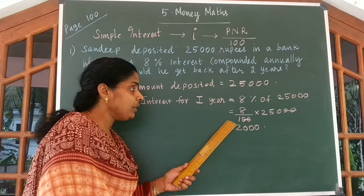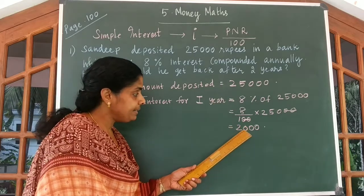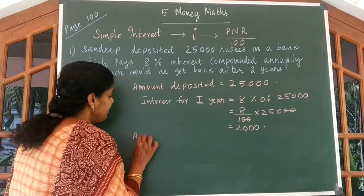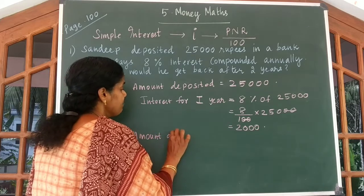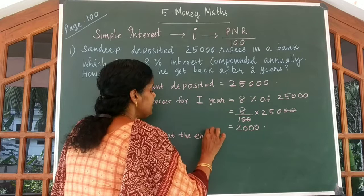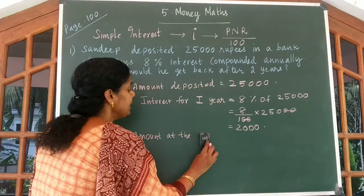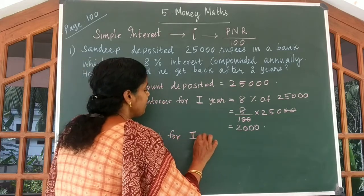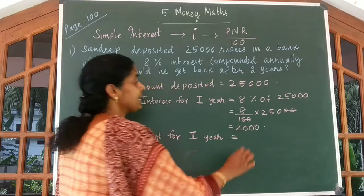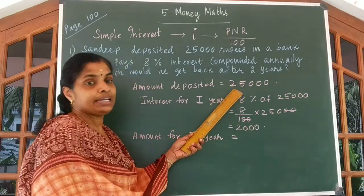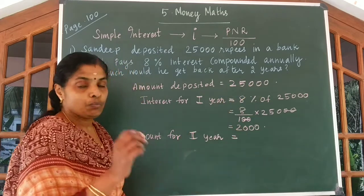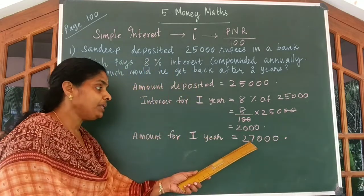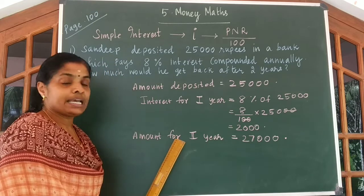Now at the end of the first year, this interest is added to the principal value. So the amount at the end of the first year, or the amount for the second year, is ₹25,000 plus ₹2,000, which gives you ₹27,000. This is the amount at the beginning of the second year.